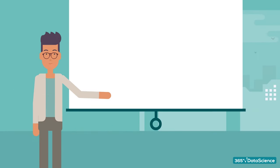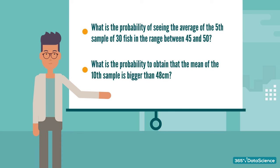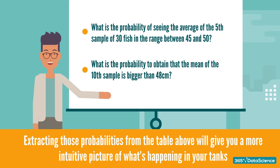Knowing all this, now we can answer some very interesting questions. What is the probability of seeing the average of the fifth sample of 30 fish in the range between 45 and 50? Or what is the probability to obtain that the mean of the tenth sample is bigger than 48 centimeters? Extracting those probabilities from the table above will give you a more intuitive picture of what's happening in your tanks.